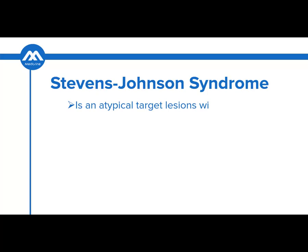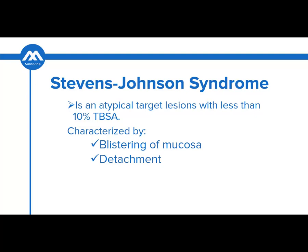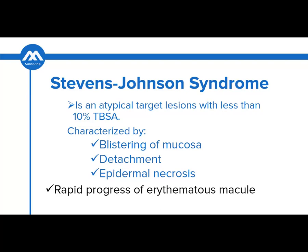What is Steven Johnson syndrome? This is an atypical target lesion with less than 10% total body surface area involvement. This syndrome is characterized by blistering of the mucosa, detachment of the epidermis from the dermis layer, and epidermal necrosis. There is a rapid progression of erythematous macules into development of erythroderma and bullae.